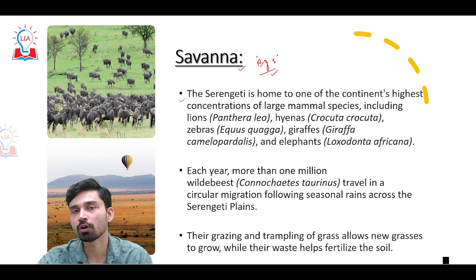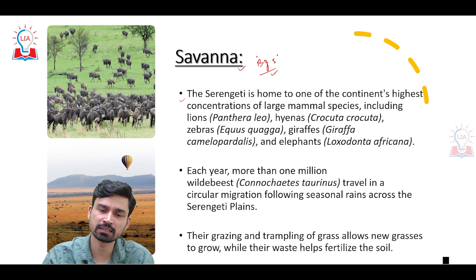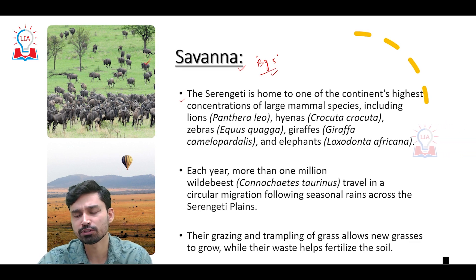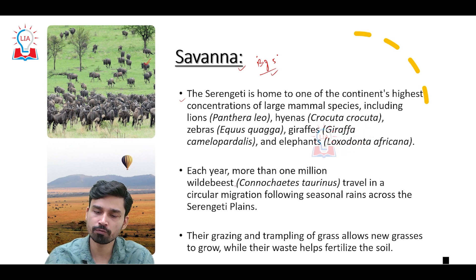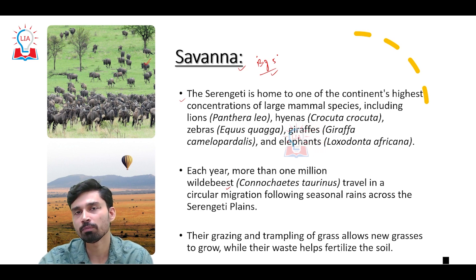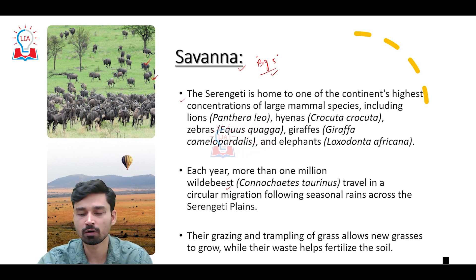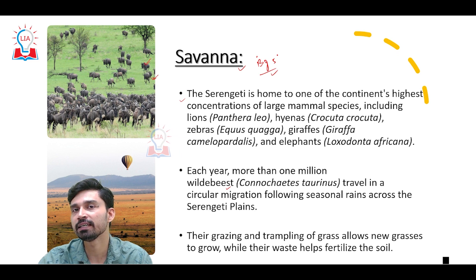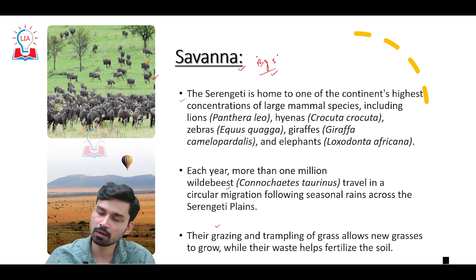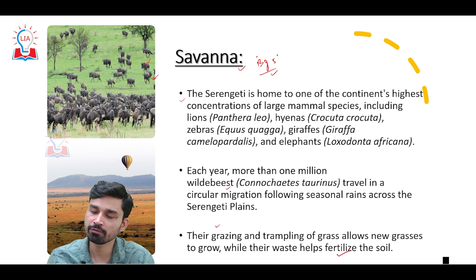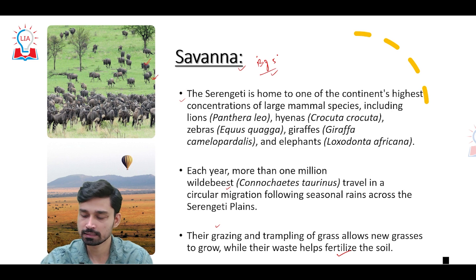Each year, one of the most popular phenomena the Serengeti witnesses is the migration of wildebeest. Wildebeest — scientific name Connochaetes taurinus — travel in a circular migration pattern following seasonal rains across the Serengeti plain. It is believed that millions of wildebeest traverse from one part of the grassland to the other in search of water, and many geographers refer to this phenomenon as the eighth wonder of the world. The migration also regulates the ecological cycle: grazing and trampling allows new grasses to grow, and their waste helps fertilize the soil.